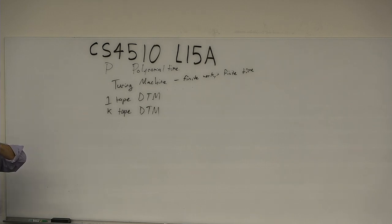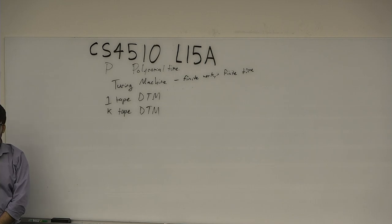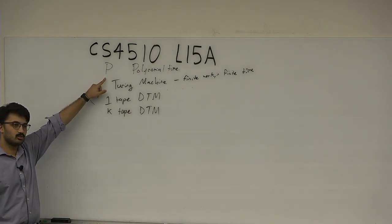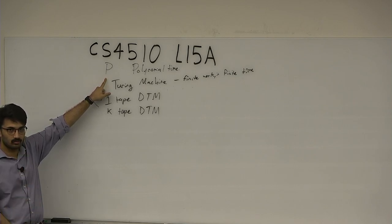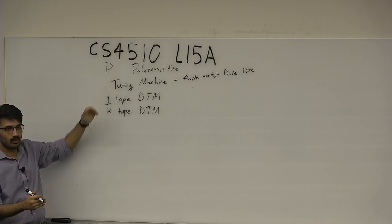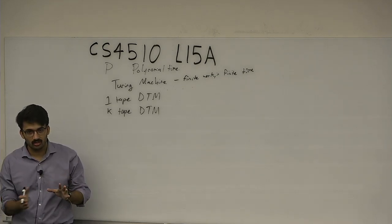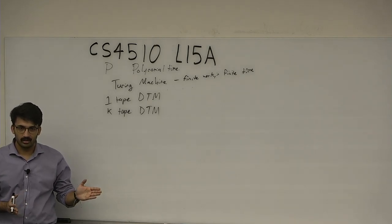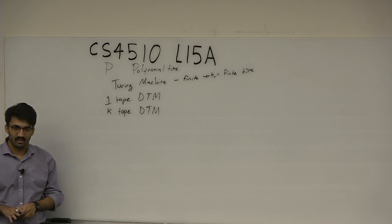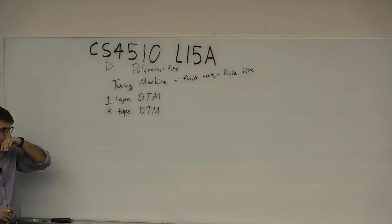A student asks: what about a Turing machine that writes A, A, A, A forever — would that be finite work? It turns out all the complexity classes we define in a useful sense have to halt. We will define P as languages which have Turing machines to decide them in a polynomial number of steps — the machine has to halt on every input in a polynomial number of steps. If you just pause an infinite-looping machine, it has only done finitely many things — at each step the machine does one thing.